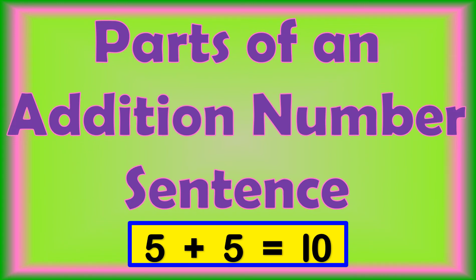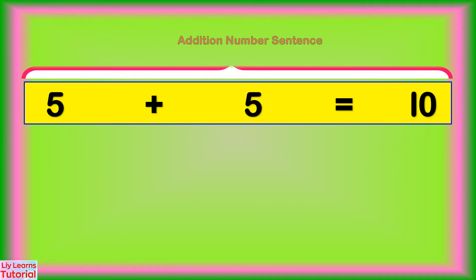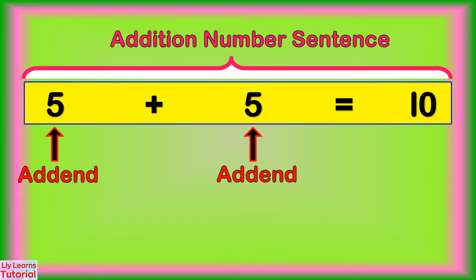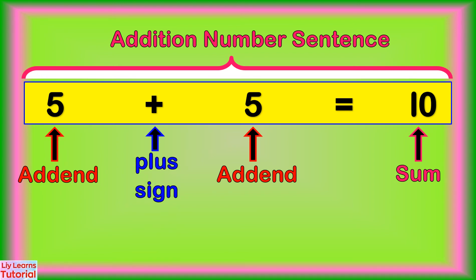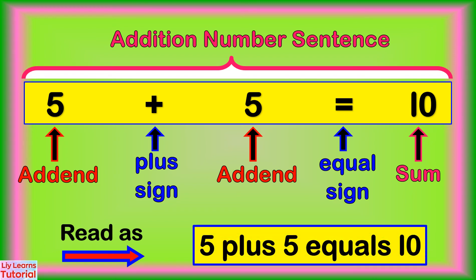Let's look at the parts of an addition number sentence. This is an addition number sentence. 5 and 5 are the add-ins. 10 is the sum. This is the plus sign, and this is an equal sign. We can read this as 5 plus 5 equals 10.